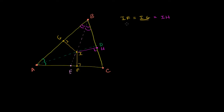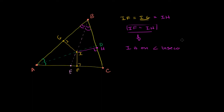Since IF is also equal to IG, and IG is equal to IH, we can say that IF is equal to IH as well — common sense: if these are all equal to each other, they must all be equal. But if I is equidistant from two sides of an angle — this is the second part of what we proved in the previous video — then that point must sit on the angle bisector for that angle. So this tells us that I must be on the angle bisector of angle ACB, because it's equidistant from the two sides of angle ACB.